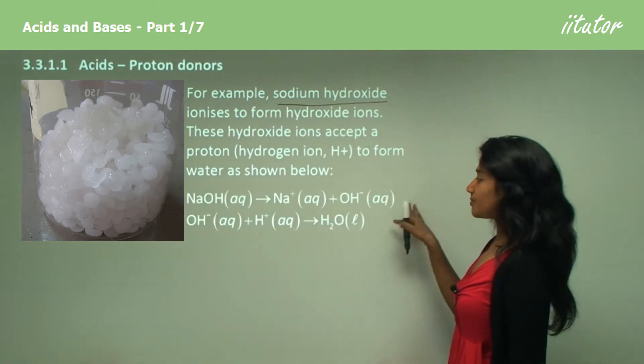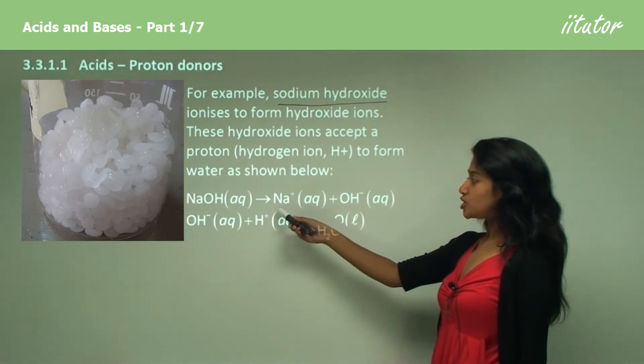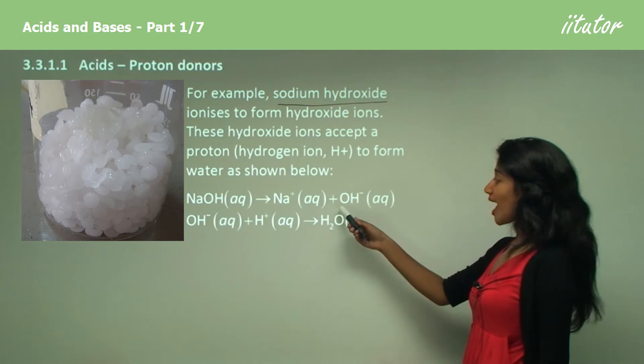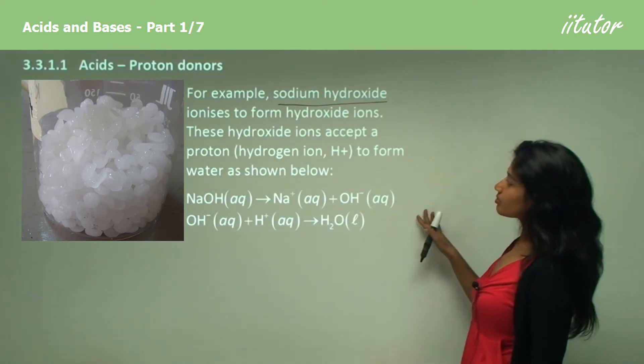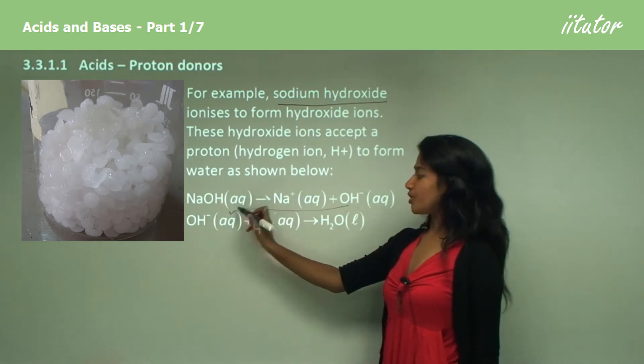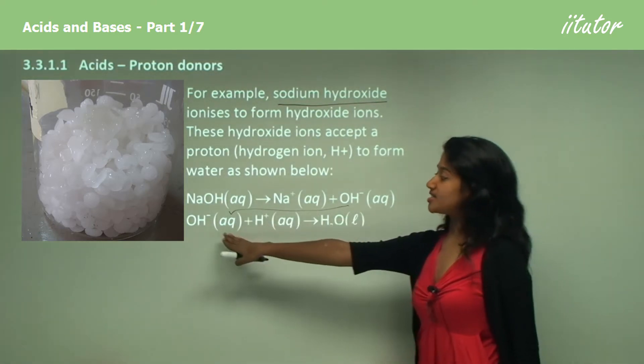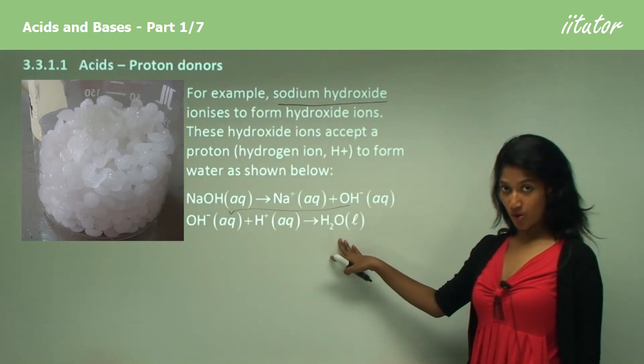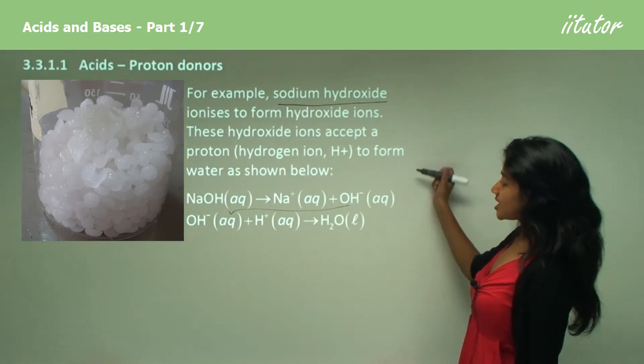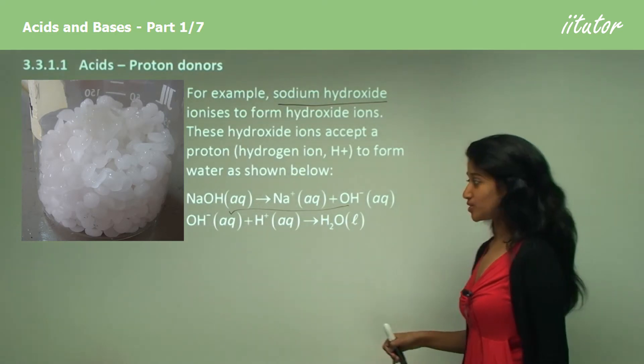This is the equation where sodium hydroxide ionizes to form Na+ and OH-. These hydroxide ions attract hydrogen ions and form water. You can see that they accept the proton. That's why they're called proton acceptors.